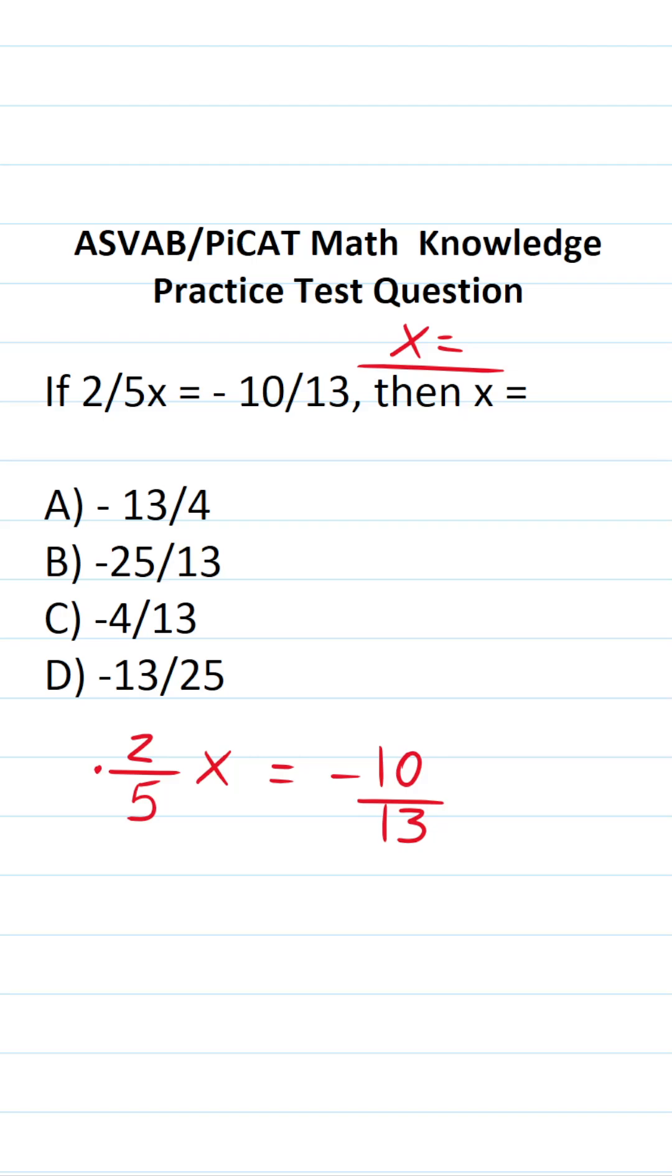To do that, we're going to multiply both sides of the equation by the reciprocal of two-fifths, notably by 5 over 2. This crosses out here and here, leaving you with x over here.